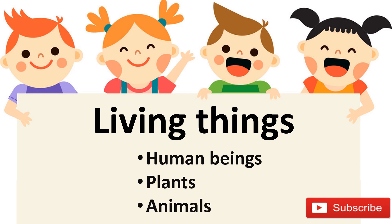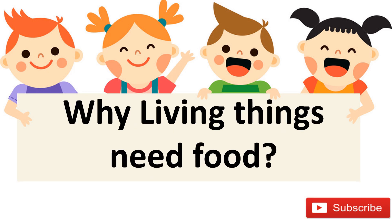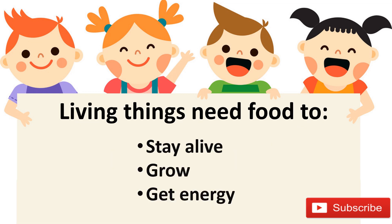The last type is animals — like cat, dog, birds, fish, dolphin. These all are animals and these all are living things.